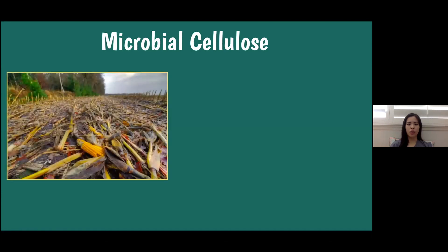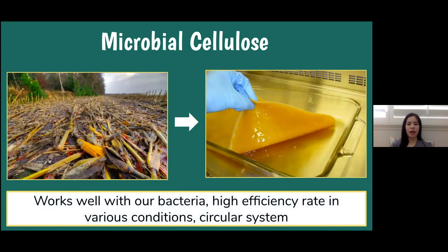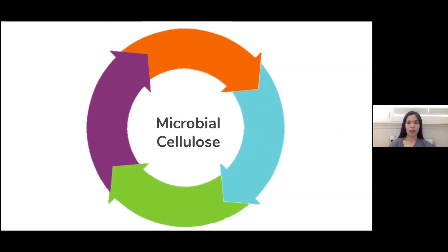We decided to use agricultural waste that would then become microbial cellulose because it works well with our specific bacteria, has a high efficiency rate in various conditions, and can make a circular system. We decided against using wood chips in our bioreactor because if there is no nitrate or not enough nitrate in the system, or if the water stays in the system for too long, the bacteria starts turning the wood chips into toxic methylmercury. To further explain the life cycle of the microbial cellulose, it would first be crop waste such as the stalks of plants or overly ripe fruits and vegetables. This is converted to a sugar source that will be made into cellulose. This cellulose sits in a bioreactor, where it's used as a medium to help denitrify the water. After its use, it will biodegrade and become a fertilizer for more crops to grow.